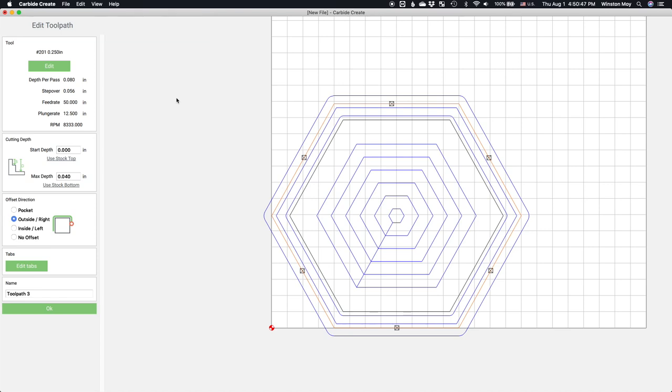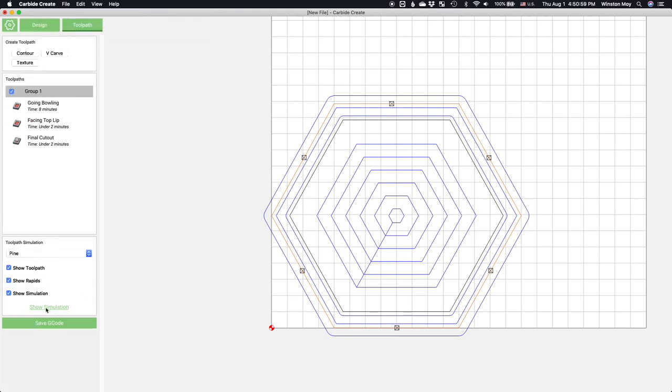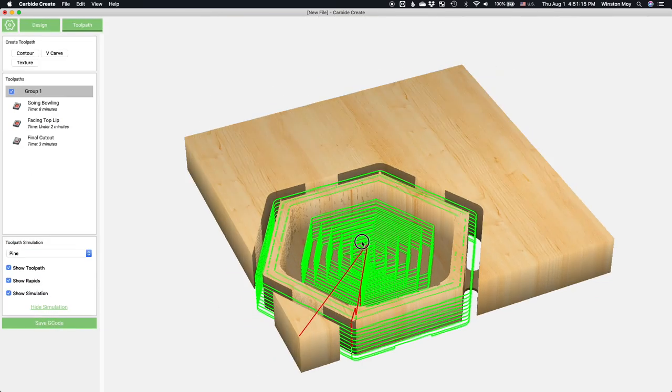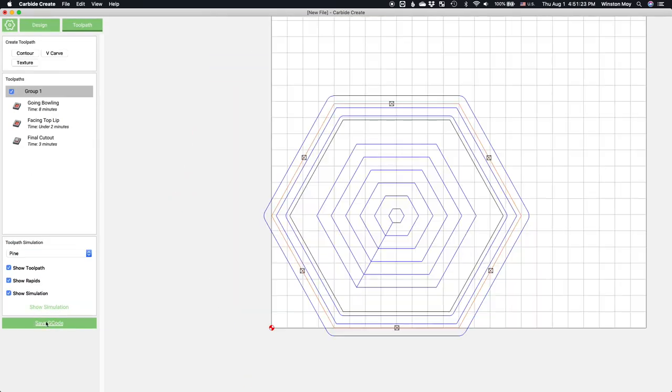I'll export the toolpath for the bowl bit by itself and the last two operations together. Carbide Motion might prompt you for a tool change between the upper pocket and the outer contour toolpaths, but since you're keeping the same tool in the machine, you can just click through it.